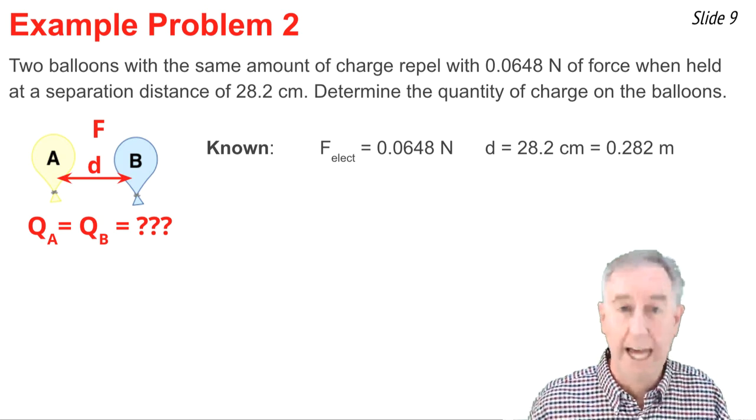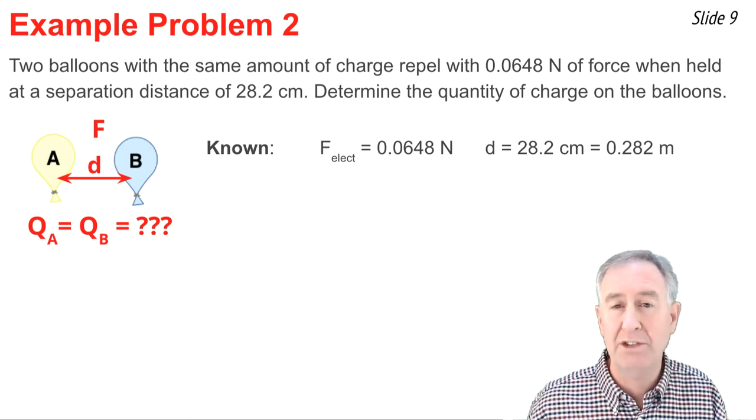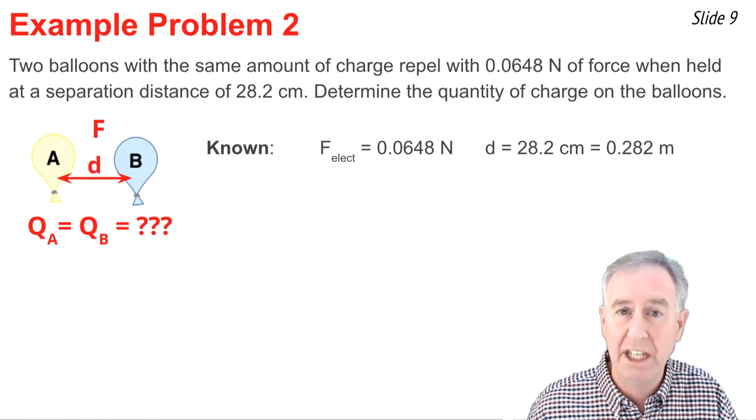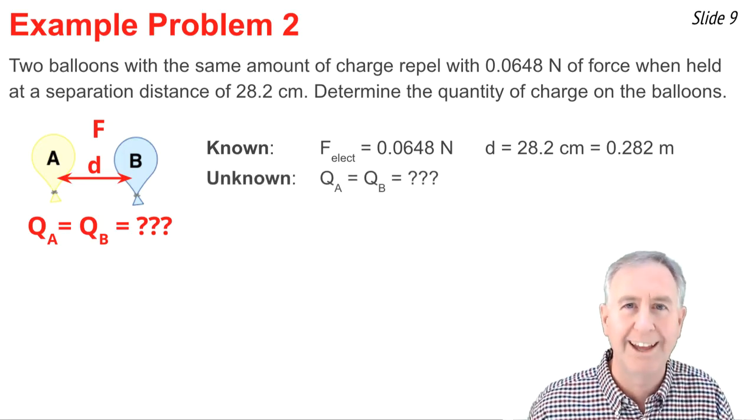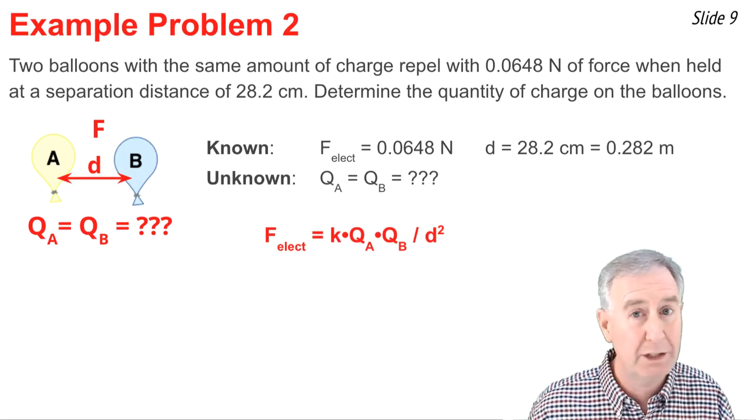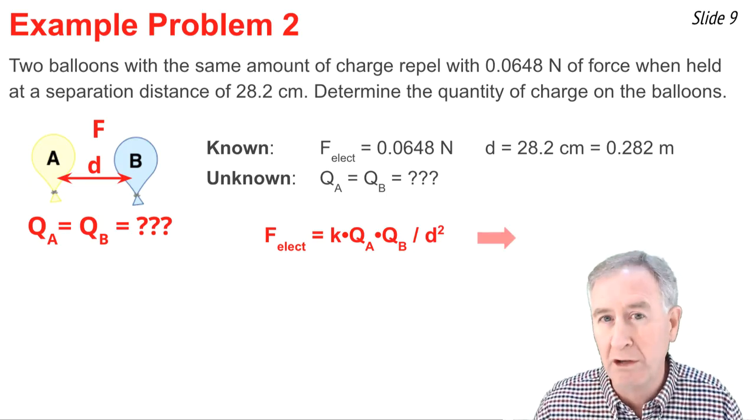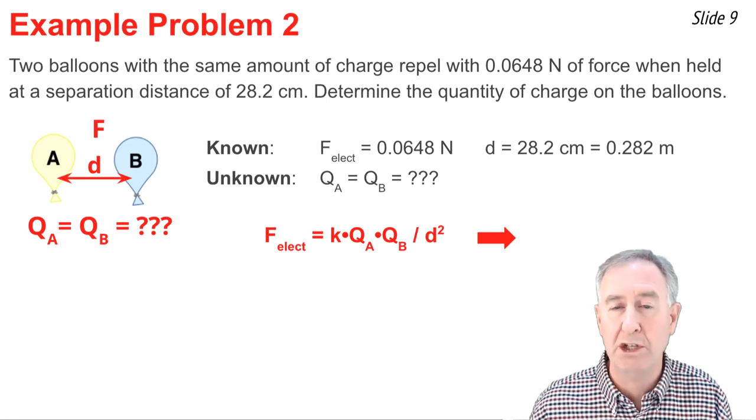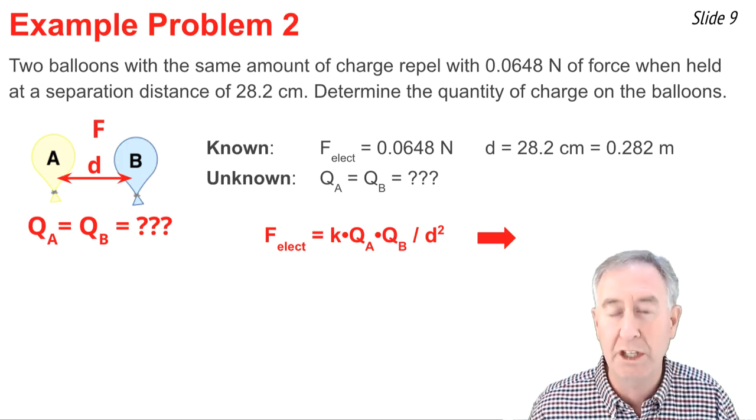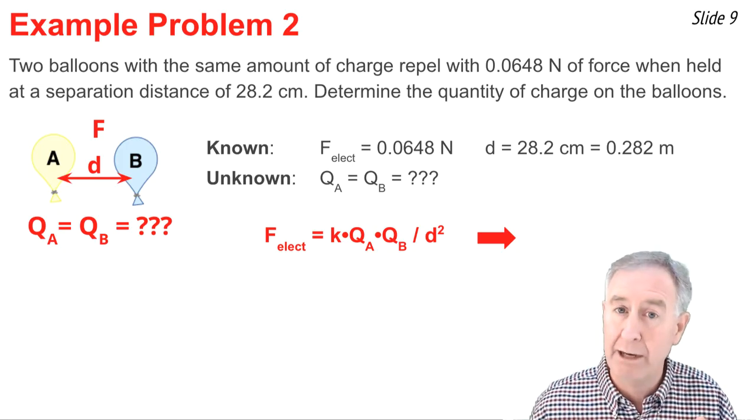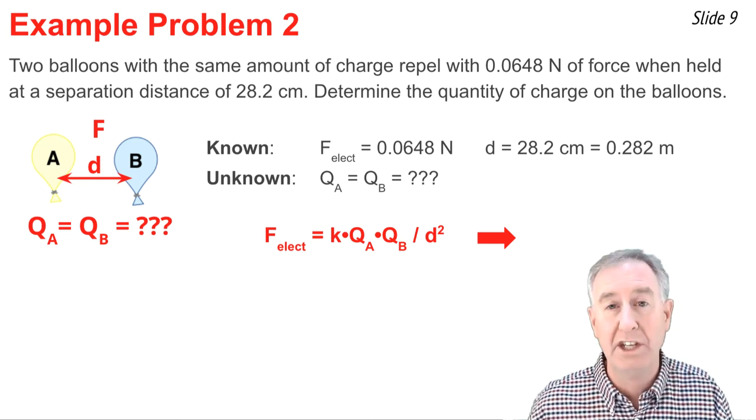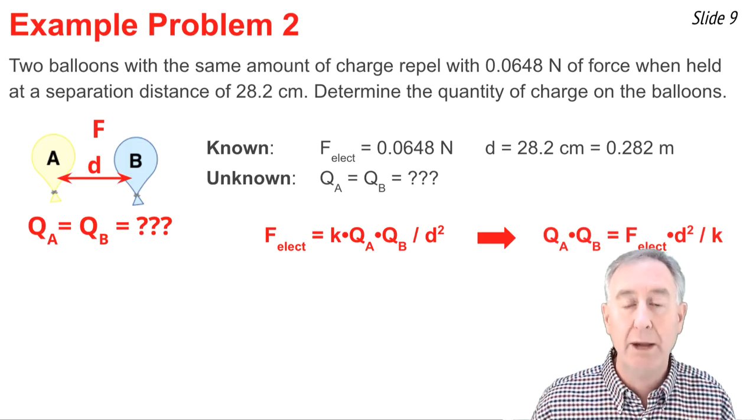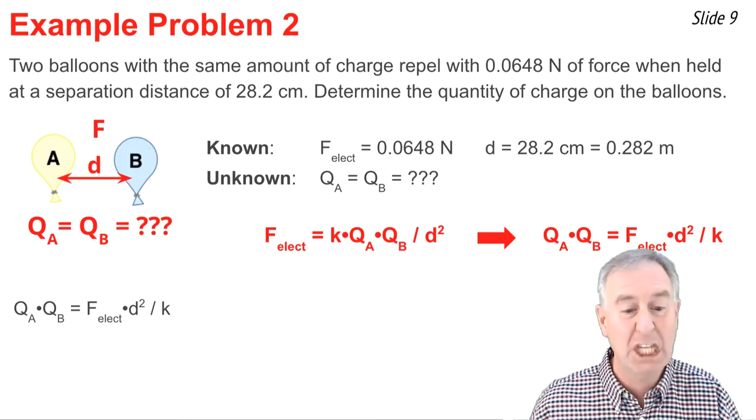D is given in centimeters. And since K value in Coulombs law has meters in it, it's important to divide by 100 and get the D in units of meters. I'm looking for QA and QB. Now here's my equation. And it's great for solving for F electrical, but I want to solve for Q. So I'm going to do some algebra. Two steps. It goes like this. I'm going to multiply both sides of the equation by D squared to get the D squared out of the denominator on the right side. Then I'm going to divide both sides of the equation by K. That will isolate QA and QB by itself on one side of the equation, and it looks like that.